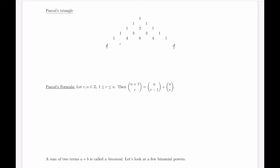For example: 1 plus 4 is 5; 4 plus 6 is 10; 6 plus 4 is 10 again; and 4 plus 1 is 5. Notice that all the previous rows are formed the exact same way: 1 plus 1 is 2; 1 plus 2 is 3; 2 plus 1 is also 3; 1 plus 3 is 4; 3 plus 3 is 6, and so on. We can construct the rest of the triangle the same way.